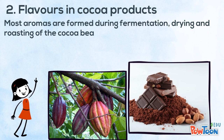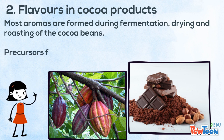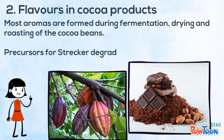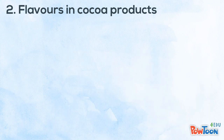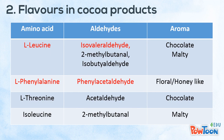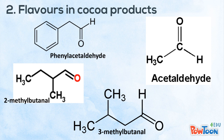The flavors of cocoa products are affected by different factors such as genetics, growing conditions, and processing stages including fermentation, drying, and roasting. Cocoa is a source of Strecker degradation with reducing sugars, amino acids, and flavonoids. Major amino acids are leucine, phenylalanine, threonine, and isoleucine, in which leucine and phenylalanine are the two most important, producing isovaleraldehyde and phenylacetaldehyde as main products. Threonine produces acetaldehyde involving more complex reactions.